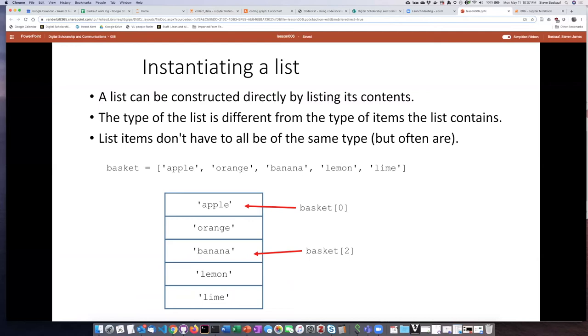One thing to be clear about is that the type of the list itself is different from the type of the items that the list contains. The type of the list itself is 'list' and the items it contains could be any other kind of object—strings, booleans, or anything else. Usually they're the same kind of thing, but they don't have to be.